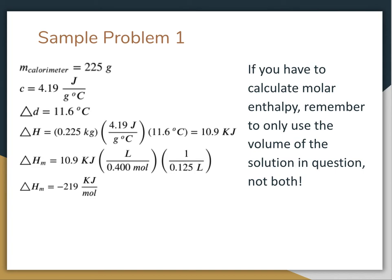So, first thing that we're going to do is going to look exactly the same as the last question that we did. We have a mass of 225 grams in this calorimeter. How did I figure that out? I added the two volumes together and converted it into grams. But when we do that, that's going to give us 10.9 kJ because we had an 11.6°C temperature change.